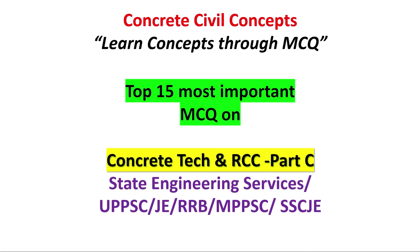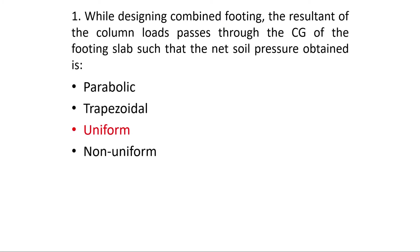Question 1: While designing a combined footing, the resultant of the column loads passes through the center of gravity of the footing slab such that the net soil pressure obtained is uniform. To get uniform soil pressure, we use either a trapezoidal footing — designed for columns with unequal vertical loads — or a rectangular footing, designed for two columns having equal loads. The resultant must pass through the CG of the footing slab.